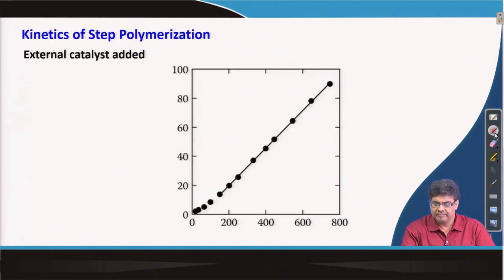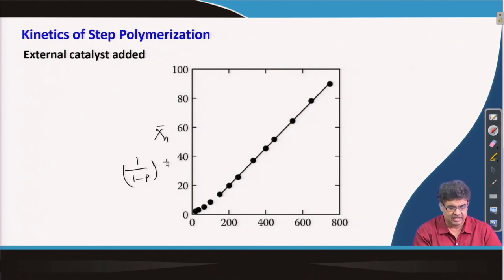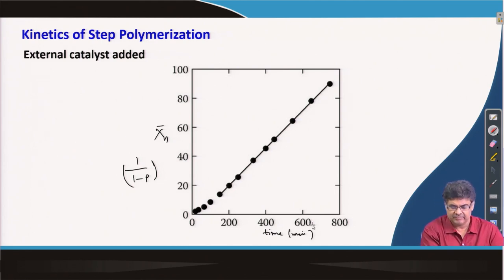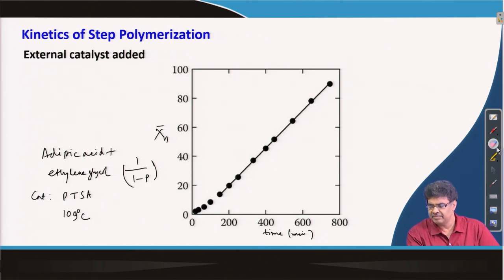This is experimentally verified: plotting X_n (= 1/(1−p)) vs. time in minutes confirms the linear relationship for the reaction between adipic acid and ethylene glycol, using PTSA (para-toluenesulfonic acid) as catalyst at 109°C. Whatever we derived from the rate equation is experimentally confirmed.